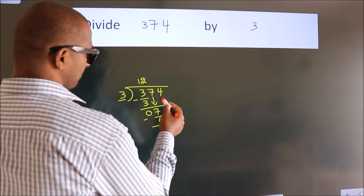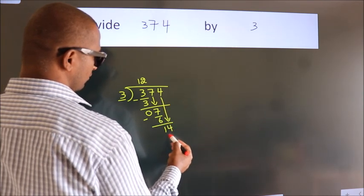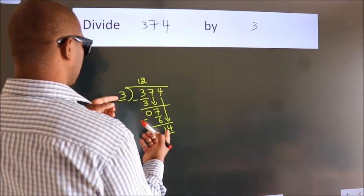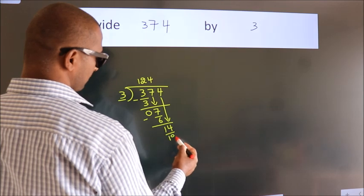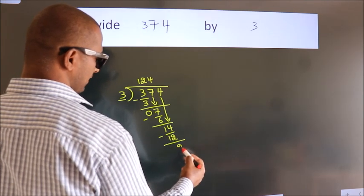After this, bring down the beside number. So, 4 down. So, 14. A number close to 14 in 3 table is 3, 4's, 12. Now, we subtract. We get 2.